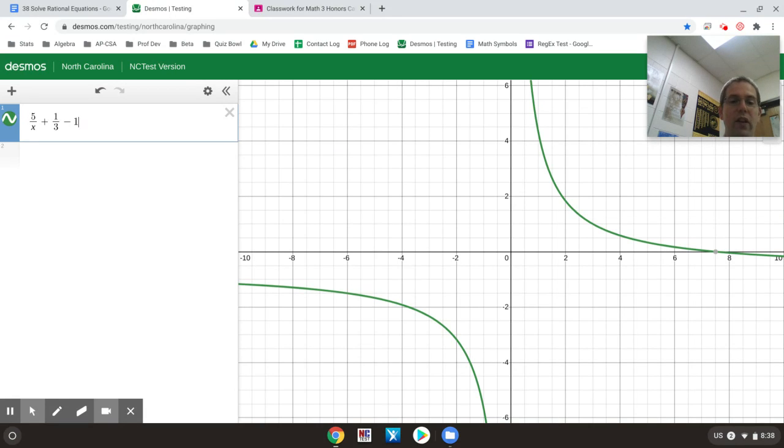Since this equation is equal to 0, the solutions are the zeros, or the x-intercept for the graph, which in this case is 7.5. And then just to check that with my fractional answer, 15 over 2 is 7.5, and that is true.